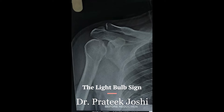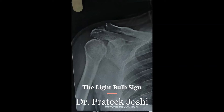Patient usually presents with severe pain around his or her shoulder. On inspection, the posterior aspect of the shoulder is more prominent and coracoid process is also more prominent. On examination, the external rotation movement is significantly restricted.